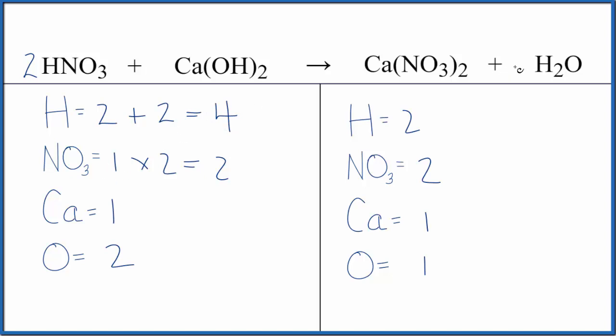If we put a coefficient of two in front of the water, two times two, that gives us four. So that balances the hydrogens, and the two goes to everything. So one times two, that gives us two, and we're done. This equation is balanced. So it's very helpful to count the nitrate as just one thing when you have double displacement reactions. Makes it a lot easier.